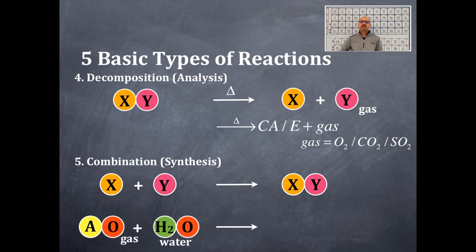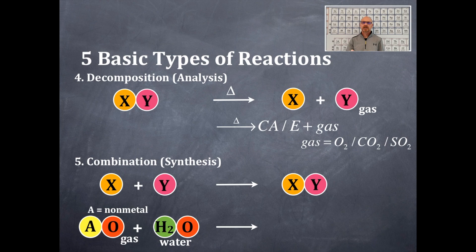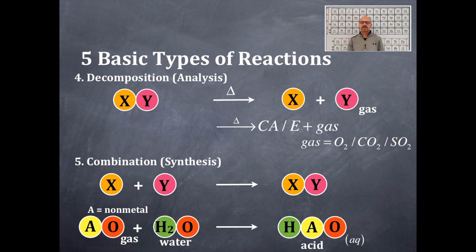Here is another special combination synthesis reaction: if you have a gas and you bubble it into water, the A in that gas is going to be a non-metal — for example, carbon dioxide, sulfur dioxide, or sulfur trioxide. It's going to be a combination reaction and you're going to get an acid. On these acids, the hydrogens are written first, the non-metal in the middle, and the oxygens on the outside, and it's going to be aqueous.